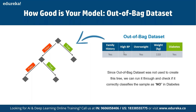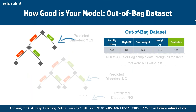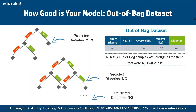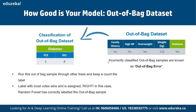Since the out-of-bag data set was not used to create the trees, we can run it through and check if it correctly classifies the sample. We run out-of-bag samples through all the trees that were built without them, and the class with the most votes wins. In this case, random forest correctly labeled the out-of-bag sample as 'no.' We repeat this for all other data points to generate the best results and find the overall accuracy of the model.